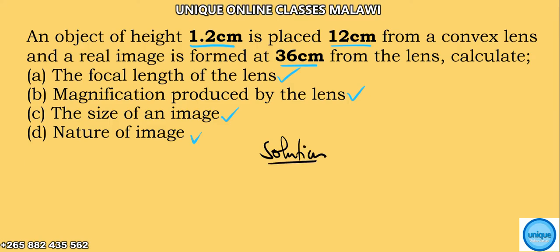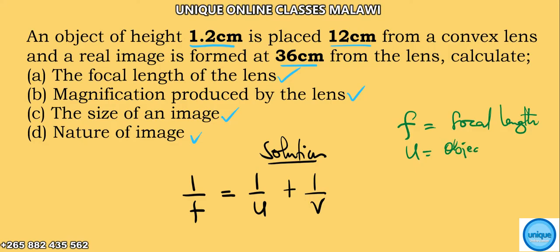We need to find the focal length using the lens formula. The lens formula is the one which says 1 over f is given by 1 over u plus 1 over v, where f is the focal length, and u is the object distance. In some textbooks they use 'do' for object distance.